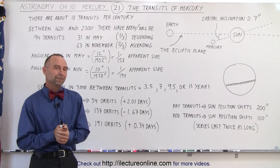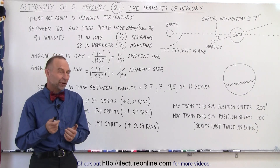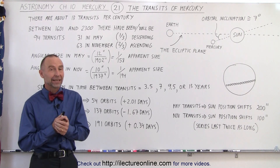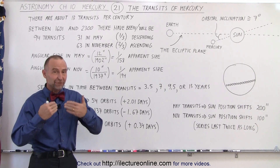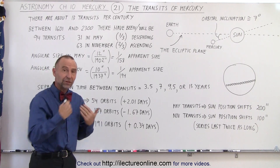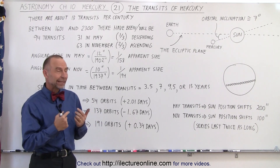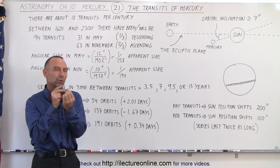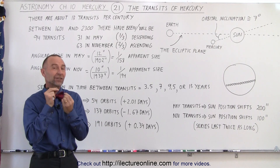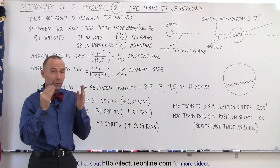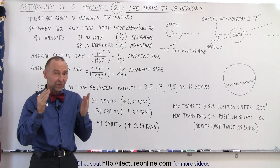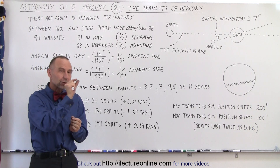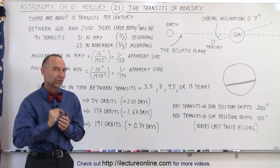Welcome to iLectureOnline. A very interesting feature of Mercury is that, because it's an inferior planet — meaning it's closer to the sun than we are — it sometimes positions itself exactly between us and the sun. When we look through a telescope, we can see a dark little disk travel across the surface of the sun.